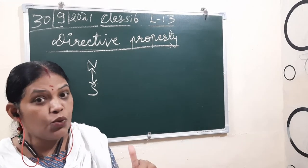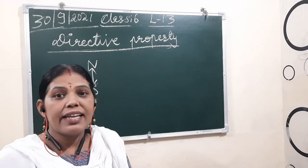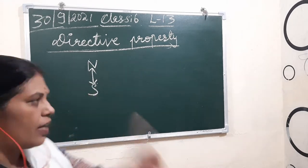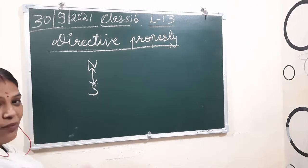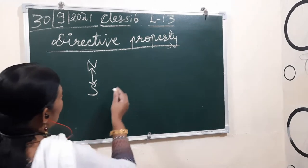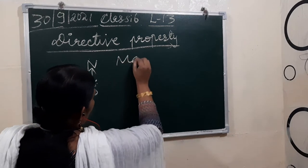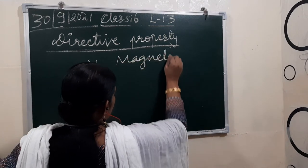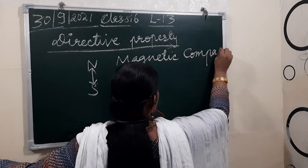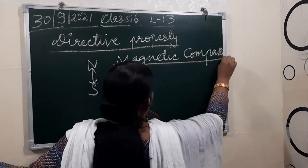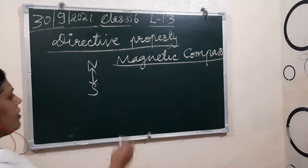By the progress of using this property, people thought that we have to invent a device for this purpose. In that way, scientists invented the magnetic compass.